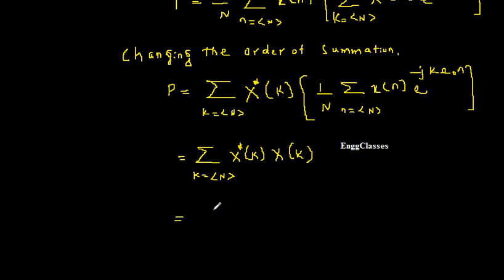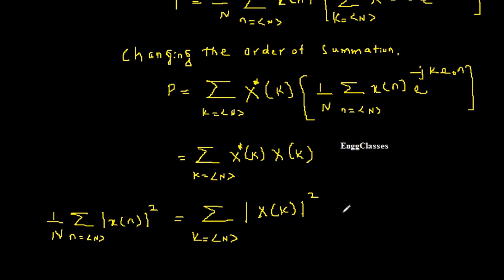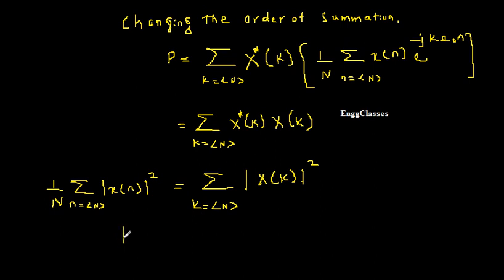Moving further, we have summation k over the range N. Now x of k multiplied with x star of k is nothing but the magnitude of x of k square. So power P, which is equal to 1 over N, summation n over the range capital N, magnitude of x of n square, has been made equal to summation k over the range capital N, magnitude of x of k square. Hence the proof.